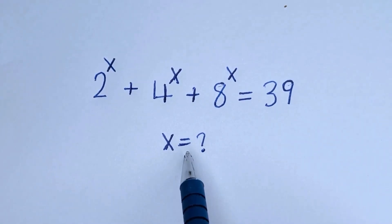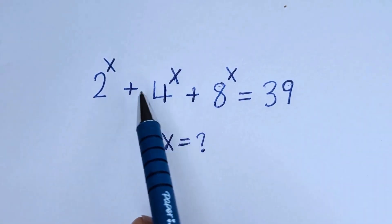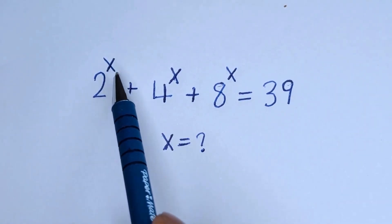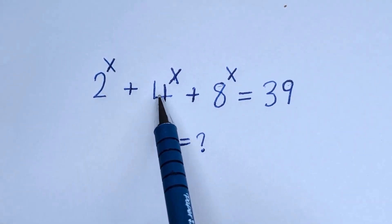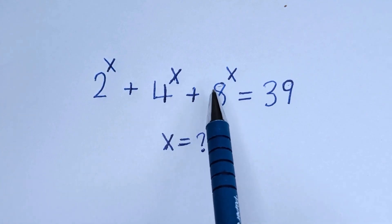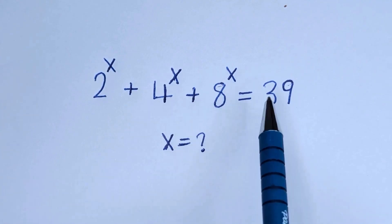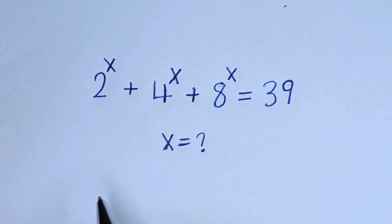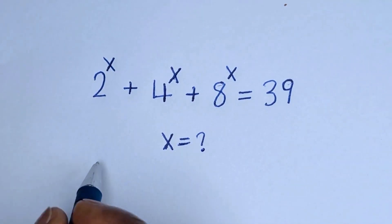Hello. How to solve for x in this equation: 2 raised to power x plus 4 raised to power x plus 8 raised to power x is equal to 39. Solution.